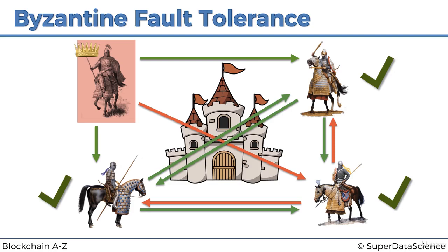How does this relate back to blockchain or other decentralized systems? In a blockchain, someone might try to attack the system, and we need a consensus protocol — like the one the generals came up with — to protect the system from traitors or attackers. We want to make it as tolerant as possible, not just tolerant of one or two attackers but as many as possible. That's the whole concept of Byzantine fault tolerance.